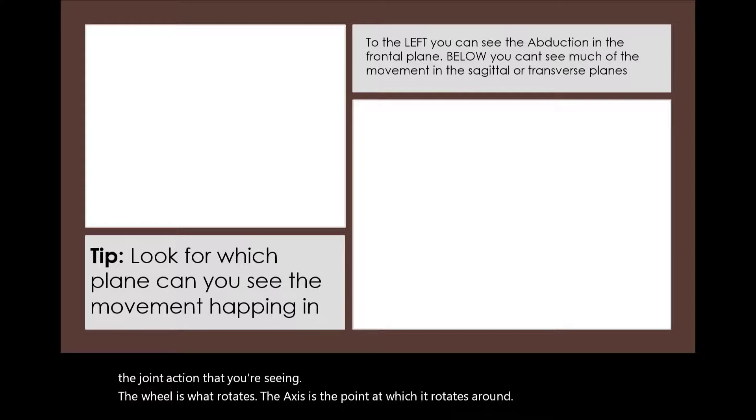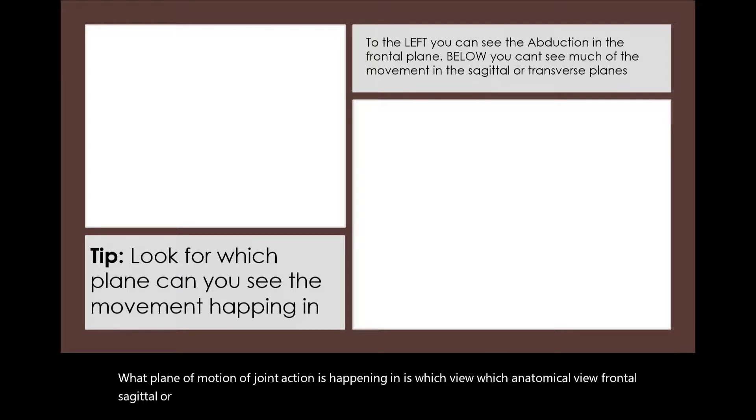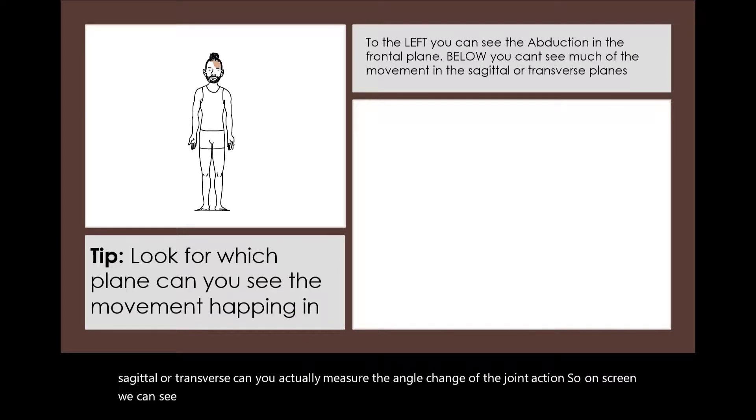Another key way to determine what plane of motion a joint action is happening in is from which view, which anatomical view—frontal, sagittal, or transverse—can you actually measure the angle change of the joint action? On screen, we can see an example of shoulder abduction.